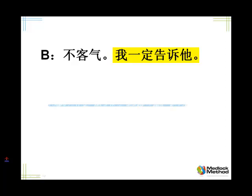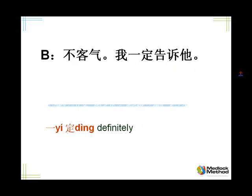不客气 — you're welcome. When someone says thank you to you, you say 不客气 — don't stand on ceremony. And 我一定告诉他 means I definitely will tell him. That seems a little odd to us — why would you definitely tell him this? Well, in Chinese, it means I promise I will do it — I'll make sure he gets that message. So, 我一定告诉他.